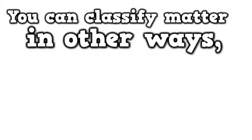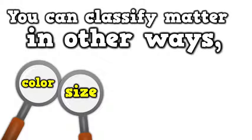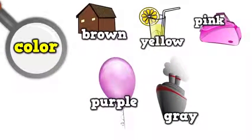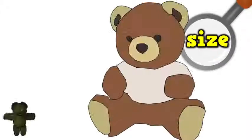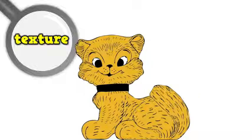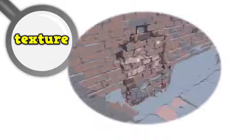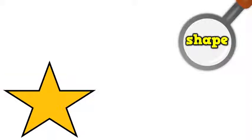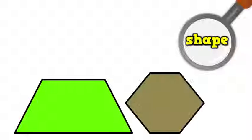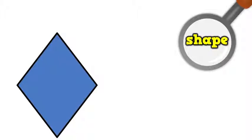You can classify matter in other ways, like by color, or size, or texture, or shape. Like color: red, white, blue, orange, black, green, brown, yellow, pink, purple, gray. Like size: big, small, or medium, skinny, or wide, thick, or thin. Like texture: spiky, or furry, or smooth, or bumpy, or soft, or rough, or lumpy. Like shape: square, circle, rectangle, star, oval, or triangle, trapezoids, and hexagons, diamonds, and octagons.